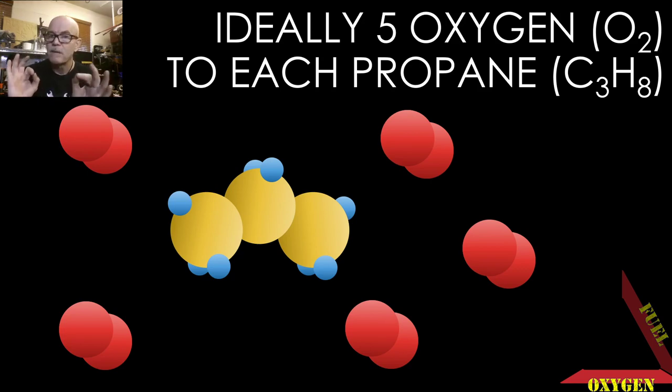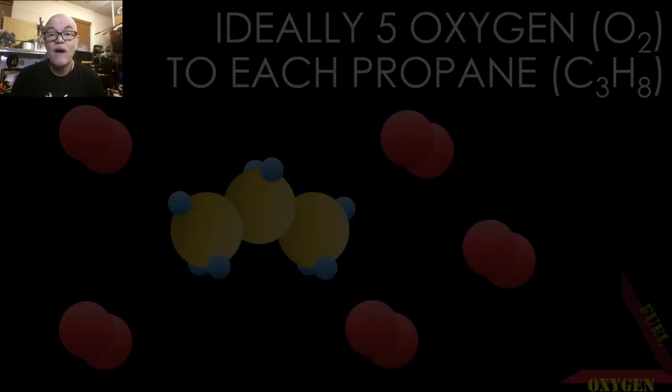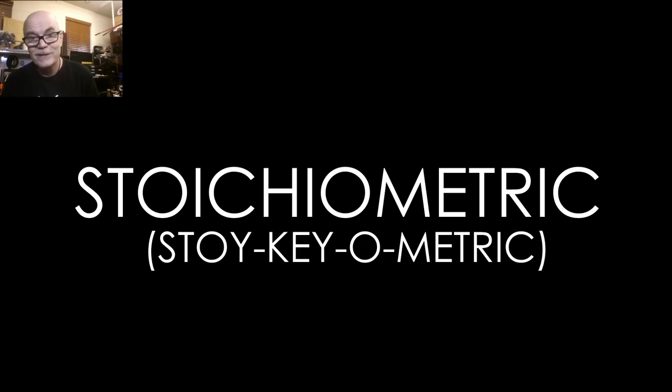So when we want to combine in our triangle of fire the propane and the oxygen, if we want to do a perfect burn, not too rich, meaning too much fuel in relationship to oxygen, or not too lean, meaning not enough fuel in relationship to oxygen, we need to have five oxygen molecules for each propane molecule. And if we achieve that, we get what's known as, and it's just fun saying it, a stoichiometric burn. Who doesn't like to say stoichiometric?